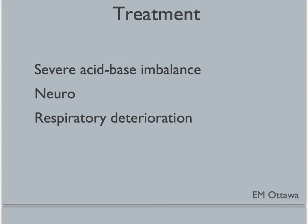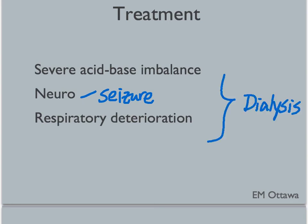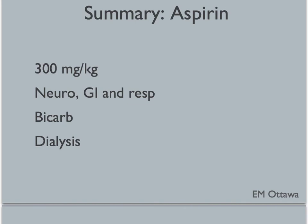If after this treatment the patient is looking sicker — with a severe acid-base imbalance on blood gas, worsening neurological deficits such as seizure or cerebral edema, or significant respiratory deterioration — we will use hemodialysis to eliminate the aspirin. In summary, aspirin toxicity occurs at more than 300 mg per kg, acts on the brain, GI tract, and respiratory system. Treatment is sodium bicarb to keep urine pH high; if that fails, dialysis is another option.